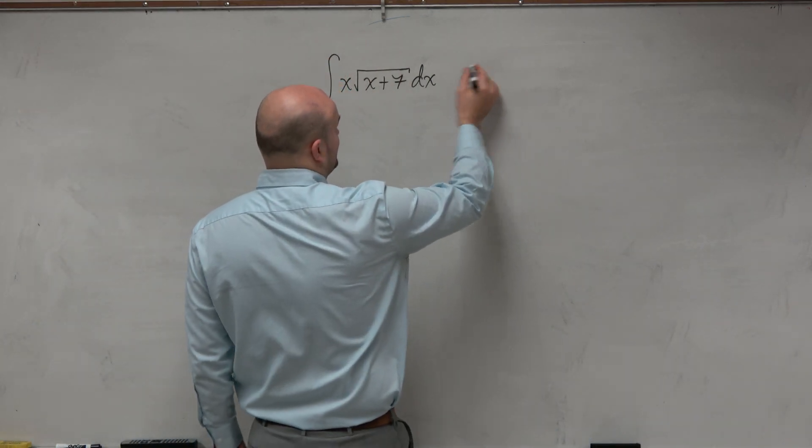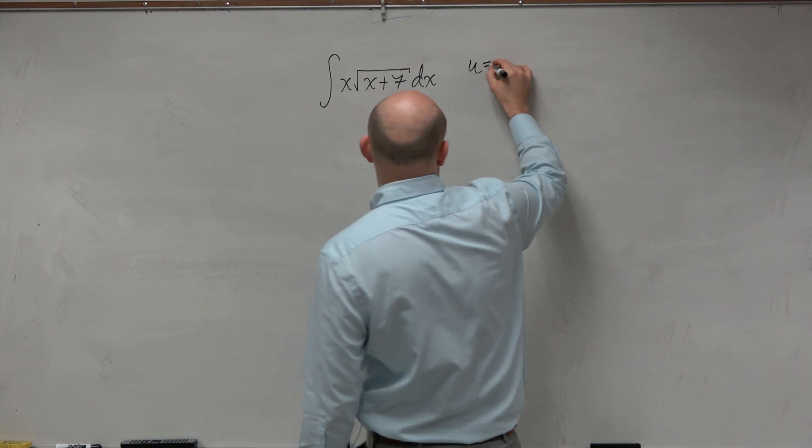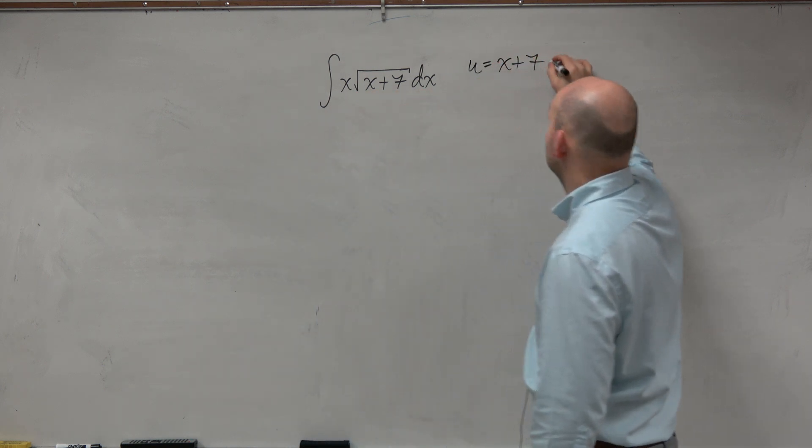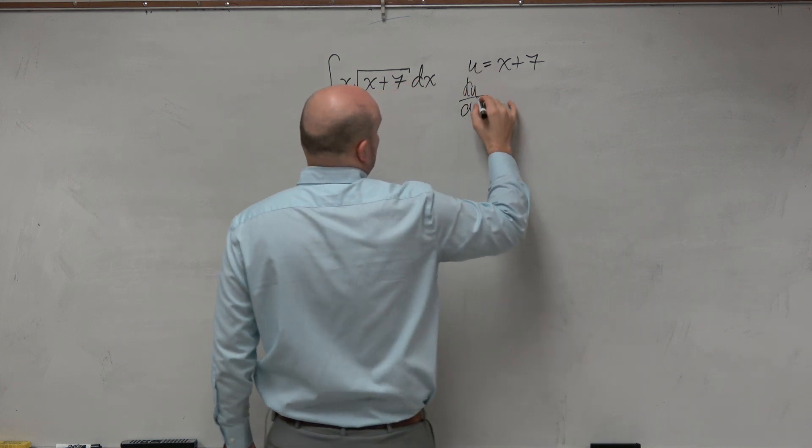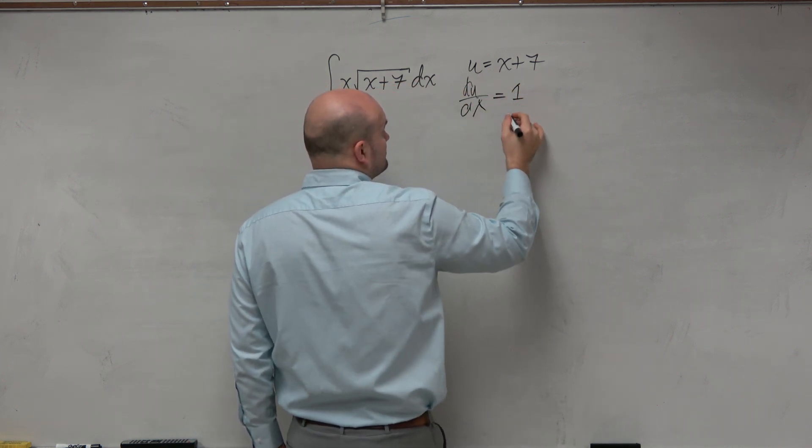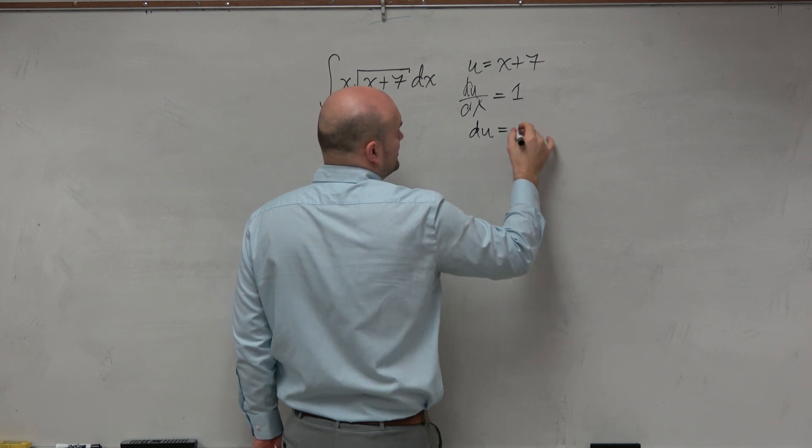So in this example, if we're going to look at this using u-substitution, you could say that u is going to be x plus 7, just like we did over there. And then if I do du/dx, I would get 1. And therefore, du is equal to dx.